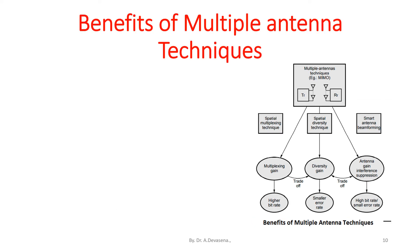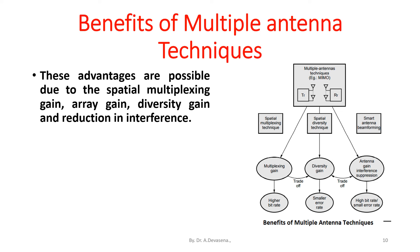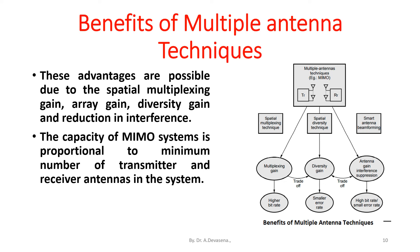These advantages are possible due to the spatial multiplexing gain, array gain, diversity gain, and reduction in interference. The capacity of MIMO systems is proportional to the minimum number of transmitter and receiver antennas in the system.